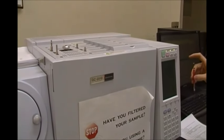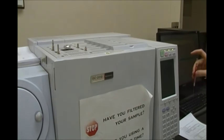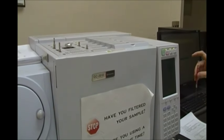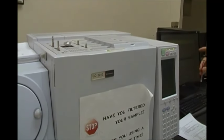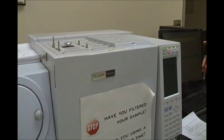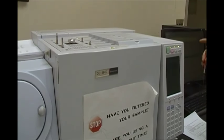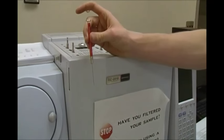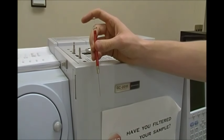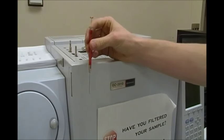Alright, so we've already clicked OK and we've clicked on standby. Basically our GC is set up, all the temperatures wherever we want them to be. So what we're going to do now is inject our sample. Our sample is going to be 1 microliter with no air buffer right here in the syringe.